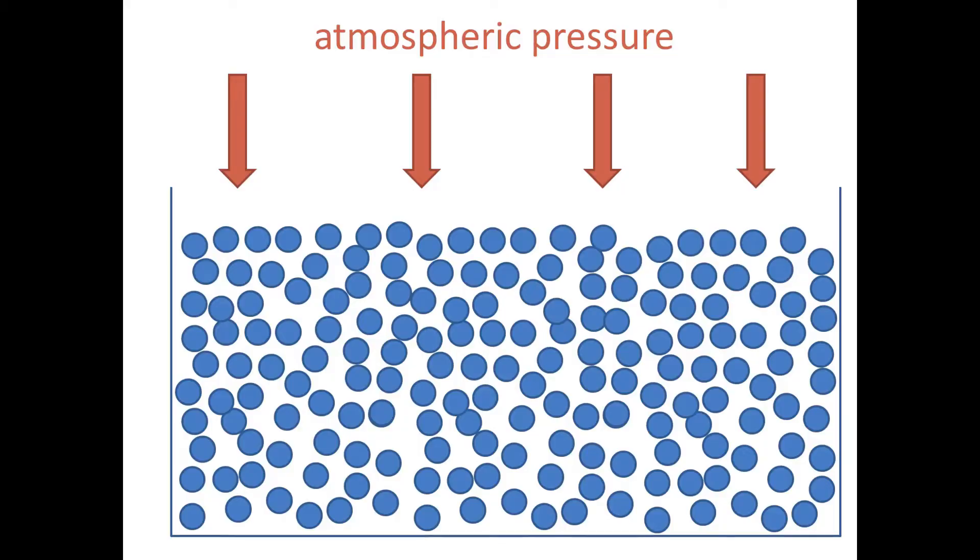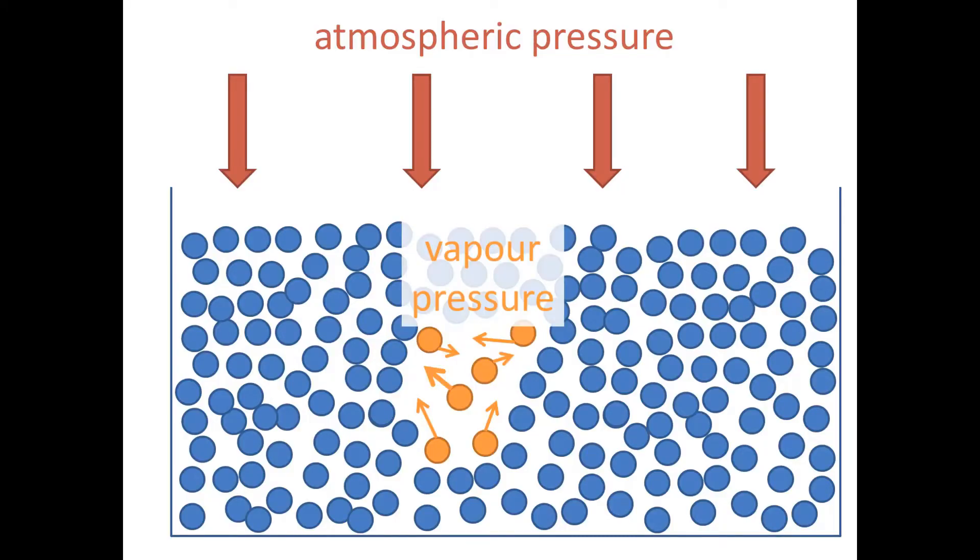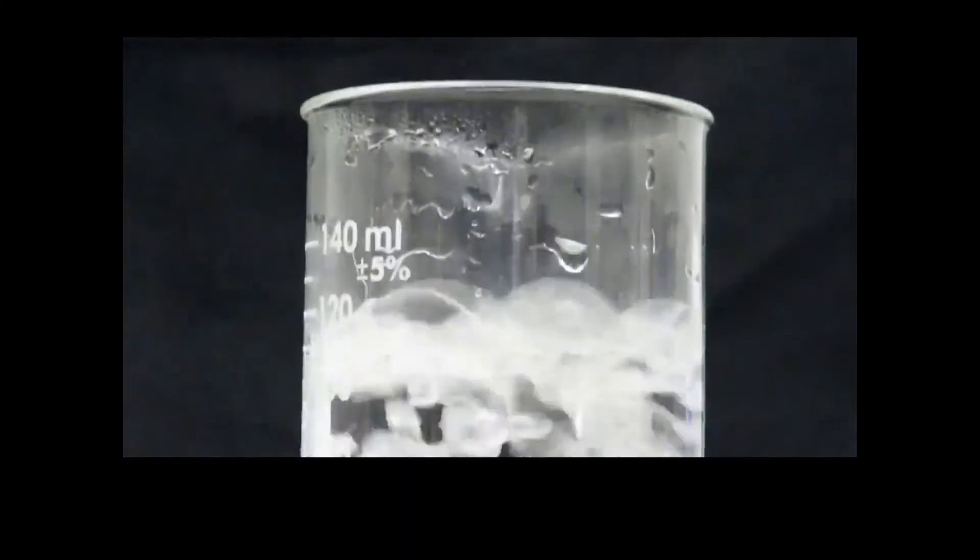Therefore, the vapor pressure that they can exert increases. When the vapor pressure they exert equals atmospheric pressure, atmospheric pressure can no longer squash a bubble of vapor formed inside the liquid. So the bubble can form, and that is when boiling happens.